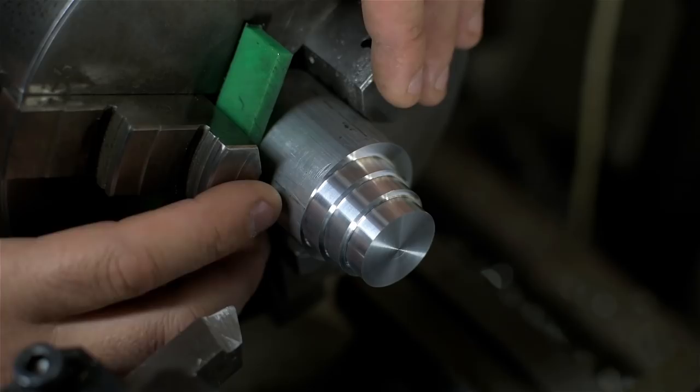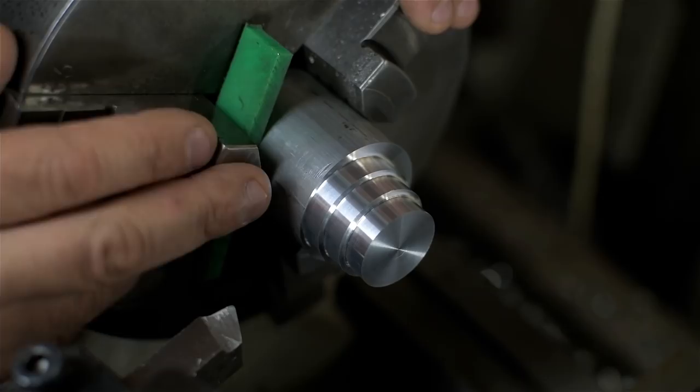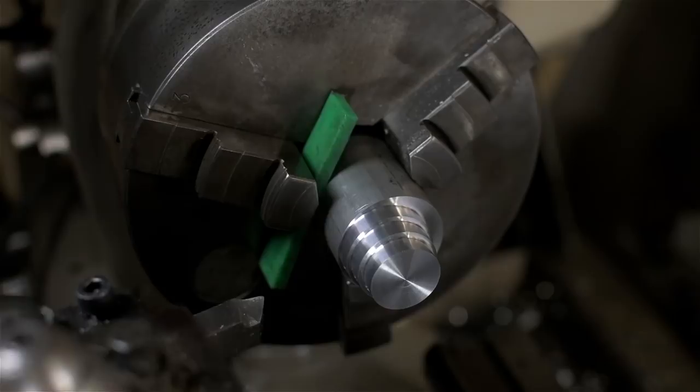This is also how you do eccentric turning. I mean not in a three jaw. You'd probably want to dial it into some specific offset in a four jaw chuck. But if you need to make a new camshaft for your car, this is how you might do it.